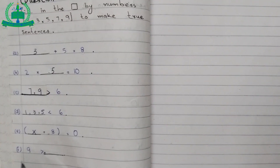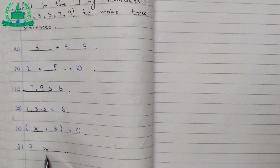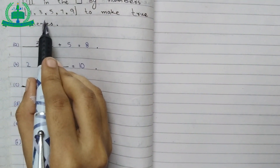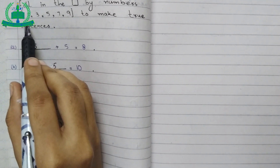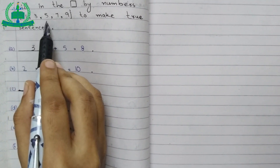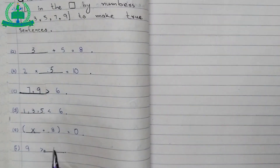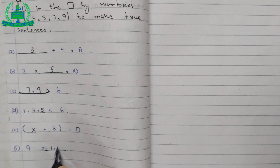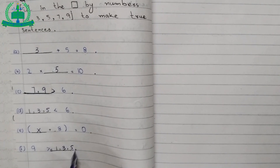F: 9 is less than or equal to dash. From the options 1, 3, 5, 7, 9 — 1, 3, 5, and 7 are less than 9. So we write 1, 3, 5, 7.